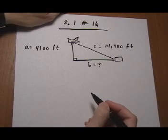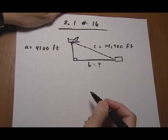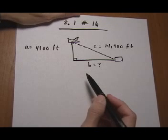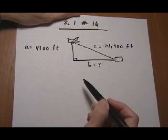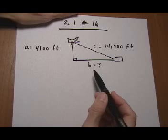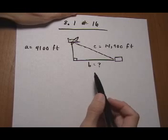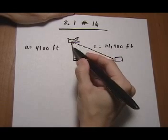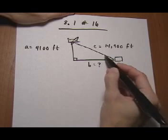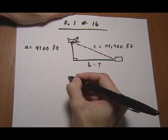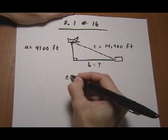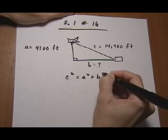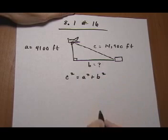Problem 8.1, number 16. This problem has a right triangle and we're using the Pythagorean Theorem to find one of the missing legs. From the Pythagorean Theorem, if we have a triangle with sides A, B, and hypotenuse C, we know that the hypotenuse squared is equal to the sum of the squares of the legs.